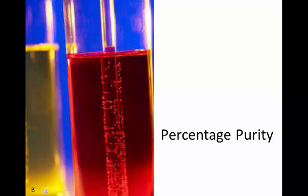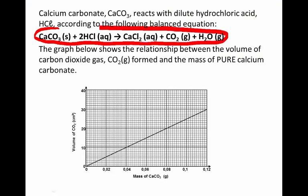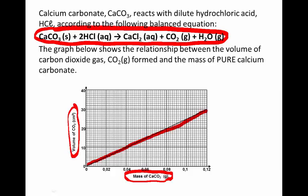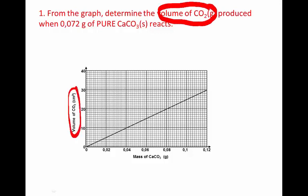Let's answer percentage purity questions from old exam questions. Calcium carbonate reacts with hydrochloric acid according to this equation. The graph here shows the relationship of the mass of calcium carbonate and the volume of carbon dioxide formed. The more calcium carbonate that is reacted, the more carbon dioxide is formed. Here we're speaking about pure calcium carbonate. The first question is: from the graph, determine the volume of carbon dioxide produced when 0.072 grams of pure calcium carbonate reacts.